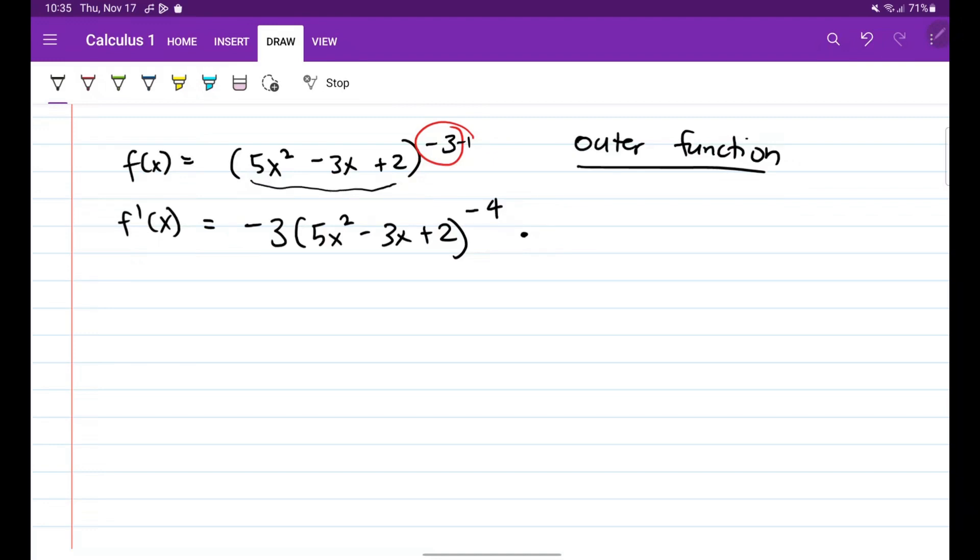So times derivative na 5x squared minus 3x plus 2, this is just 10x minus 3. Okay, so ito na yung derivative natin of f of x. Okay, so let's do another example.